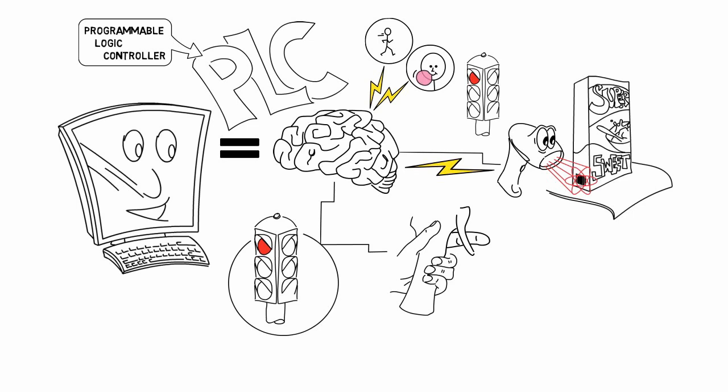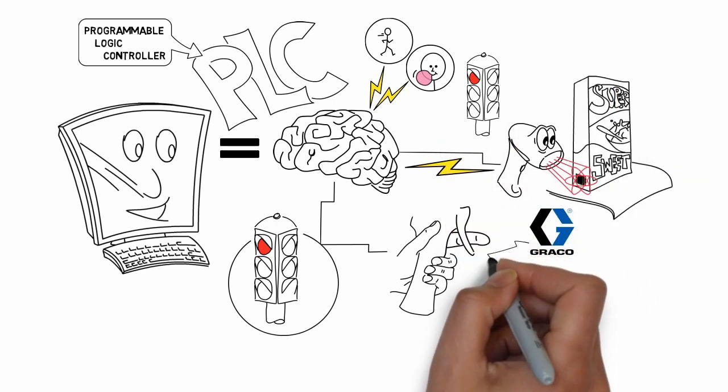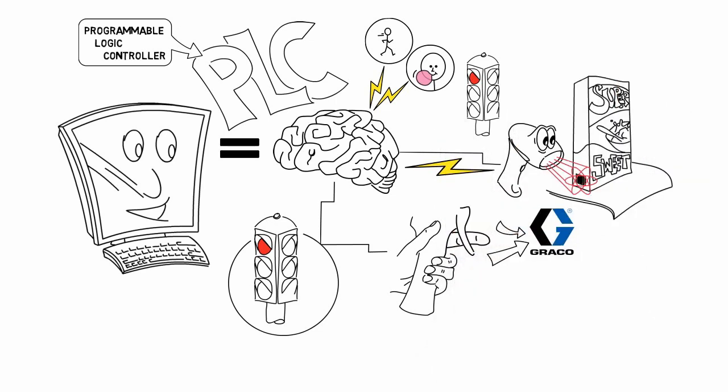So what does a PLC do in Graco terms, you might ask? Well, in Graco terms, a PLC can control many inputs and outputs like direct a paint line to change colors. So all the widgets being painted go from red to maybe black.